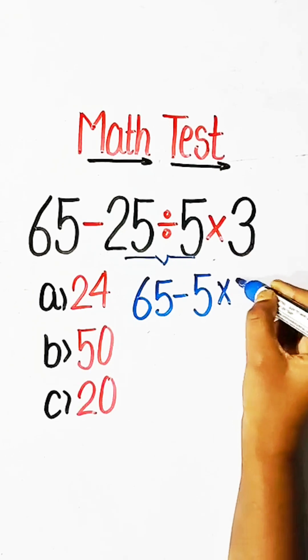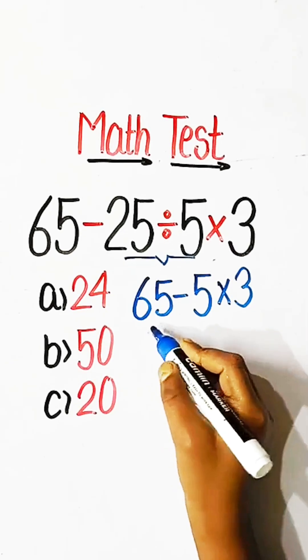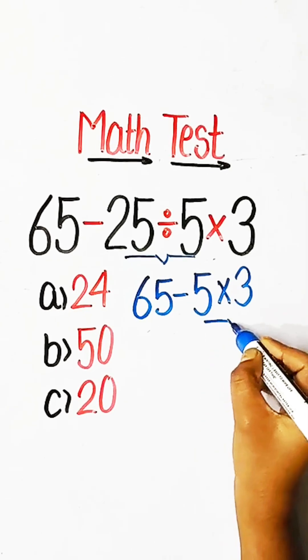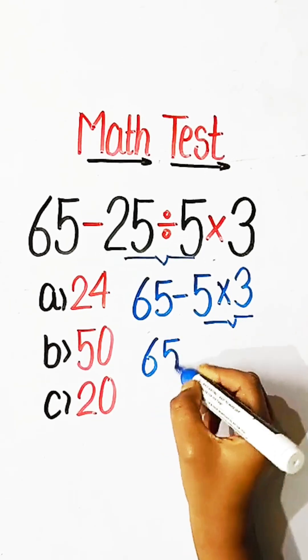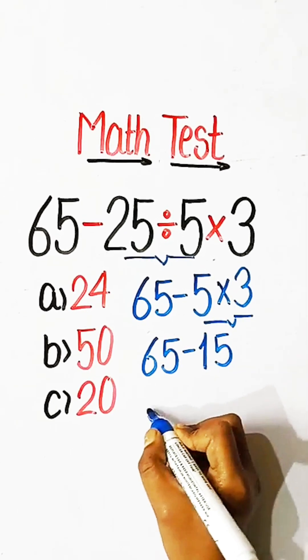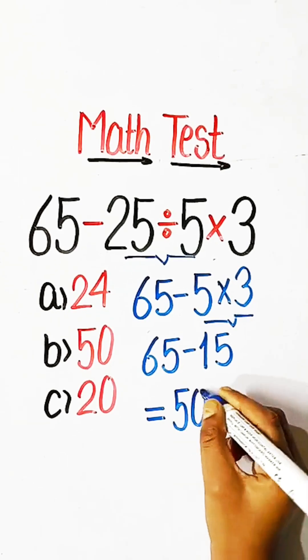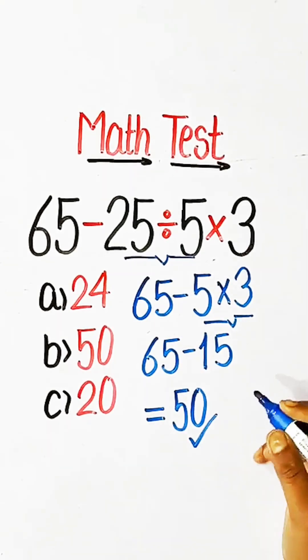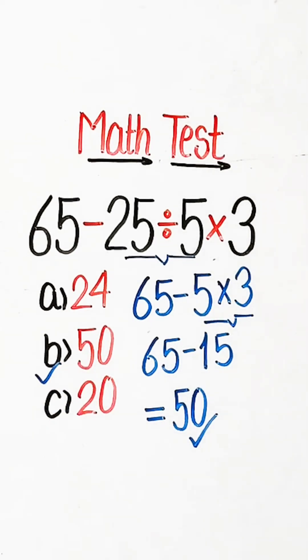Multiply by 3, and 65 minus 15 equals 50. So 50 will be our correct answer. Option B will be right.